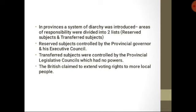Furthermore, the British claimed they were extending voting rights to more local Indians. But according to the Montague Chelmsford Reforms and the new rules, still only 2% of the total population could vote — likely only 5.5 million people out of a total of 250 million.